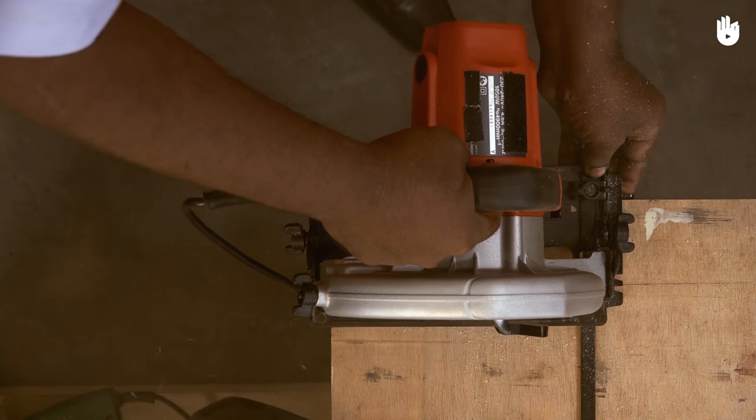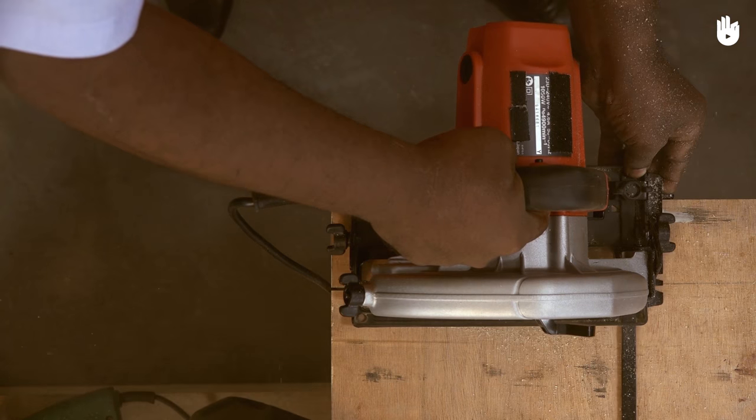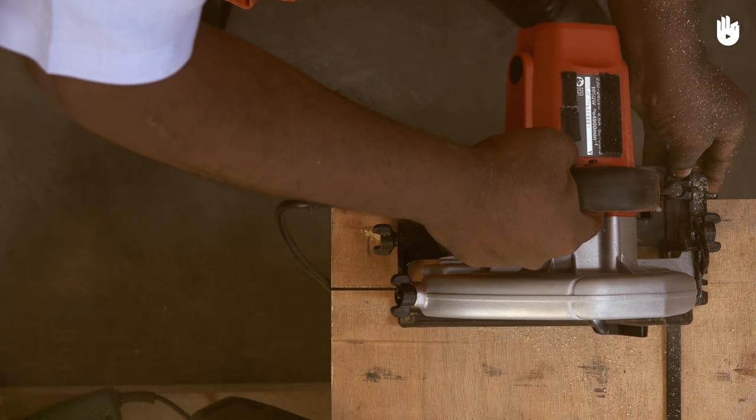In this video you will learn how to use a circular saw. It is a power tool used to make straight cuts through wood panels.